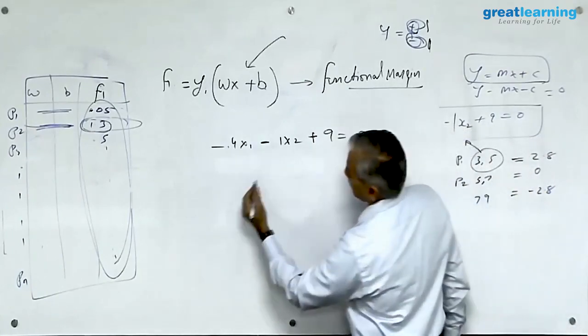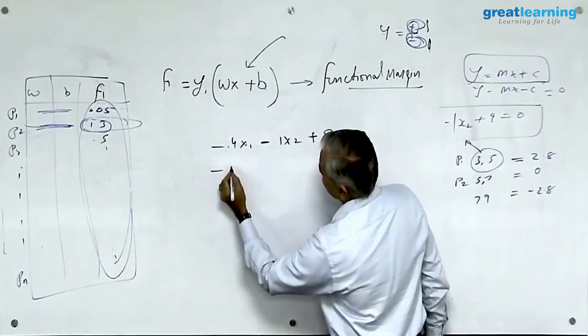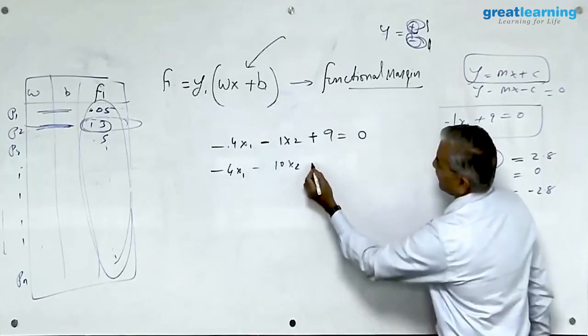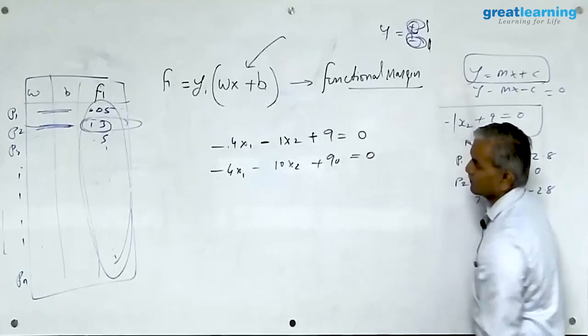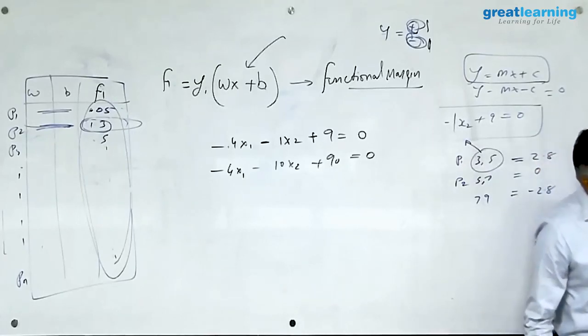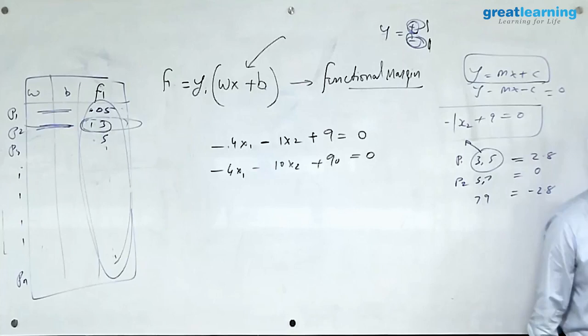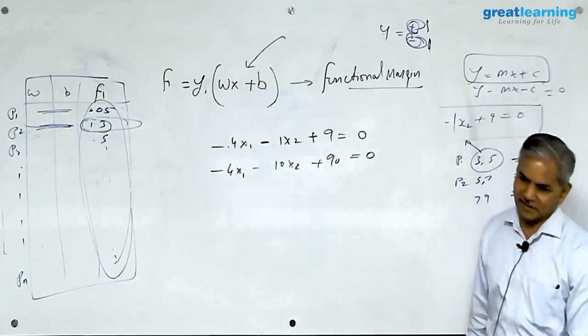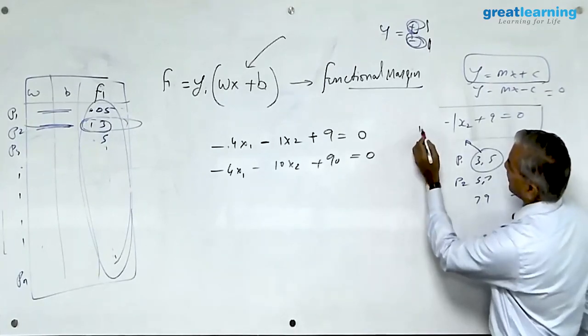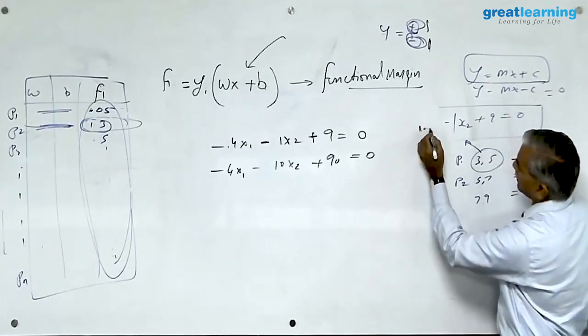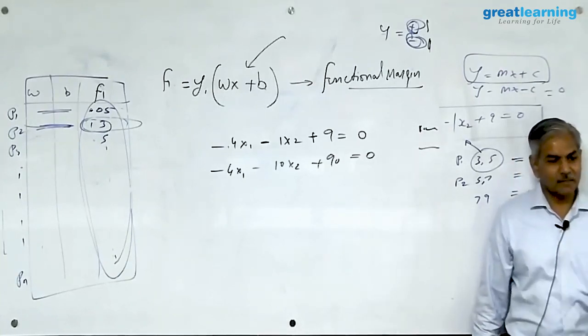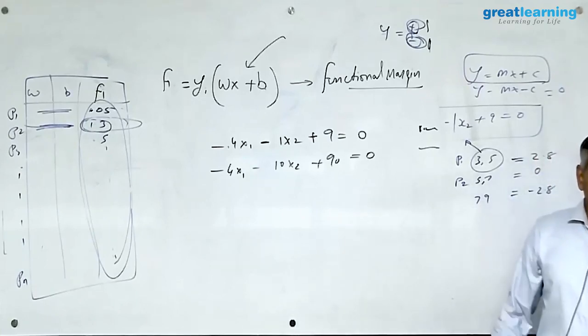Now if I give you one more line, say minus 4x1 minus 10x2 plus 90 is equal to 0. They look like two different lines but they are the same lines. Instead of saying one kilogram I am saying thousand grams. It is the same line in the mathematical space represented by two different expressions.